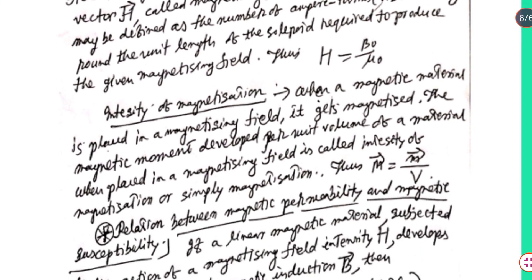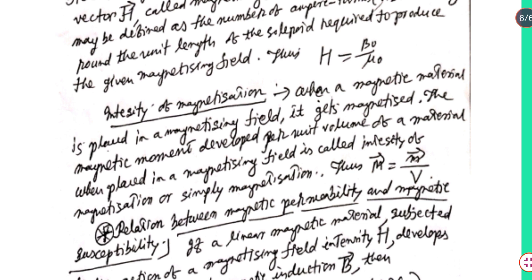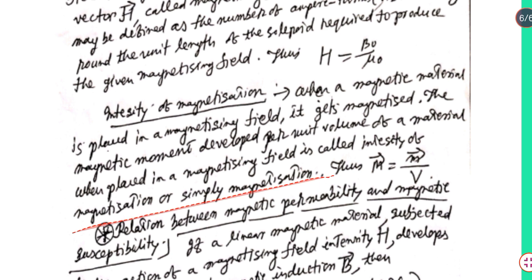Intensity of magnetization: When a magnetic material is placed in a magnetizing field, it gets magnetized. The magnetic moment developed per unit volume of a material when placed in a magnetizing field is called intensity of magnetization, or simply magnetization. Thus, vector M equals vector m divided by V.